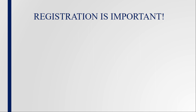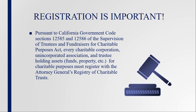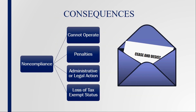Why does a charitable organization need to register? Government Code Sections 12585 and 12586 require every charitable corporation, unincorporated association, and trustee conducting business in California to register with the Registry within 30 days of initially receiving property. We will discuss the definition of property, also referred to as assets, later in this presentation.